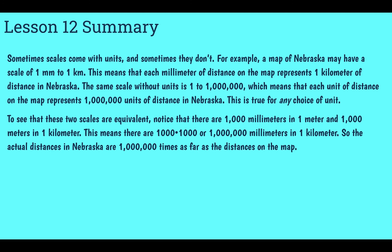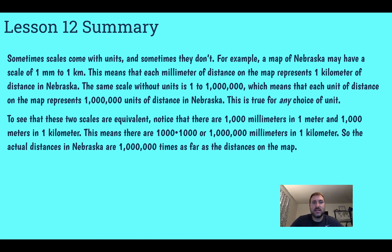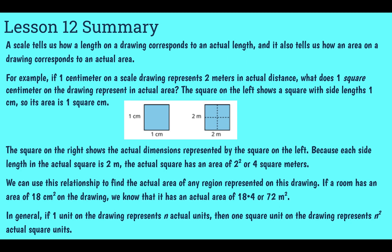In this lesson we learned that scales sometimes come with units and sometimes they don't, but we can always convert one into the other. If we want to check if scales are equivalent, we just convert so that our units match. For example, a scale of one to one million means every unit on the map equals one million of the same unit in real life. Also, a scale can tell us how area corresponds to actual size — area scales by the square of the linear scale factor, since scale goes in two directions.